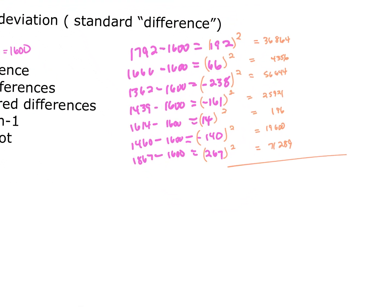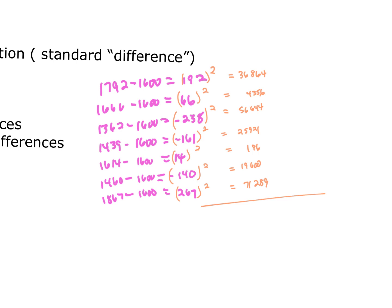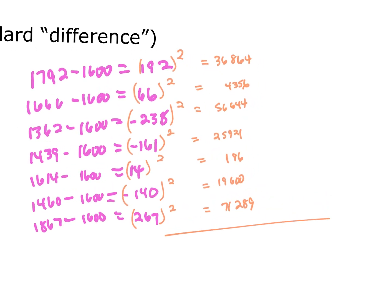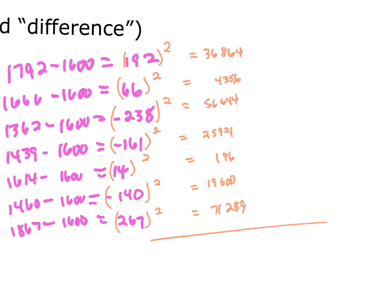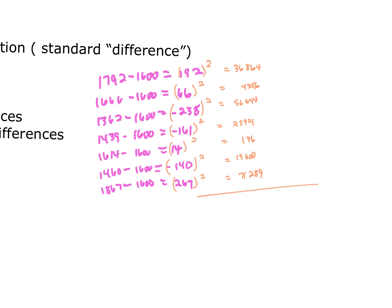We found our mean, which was 1600, and then we found our differences. Some of those deviations are positive, some are negative, so to make sure we're talking about a distance that is always positive, we're squaring all of those numbers. After we square all of those numbers, we want to find the sum of all of those, and that gives us 214,870.